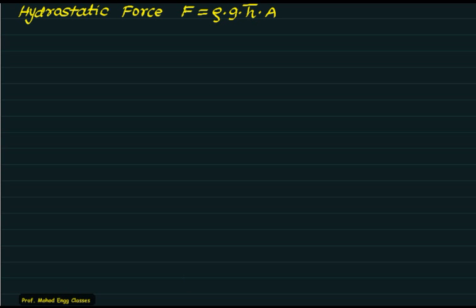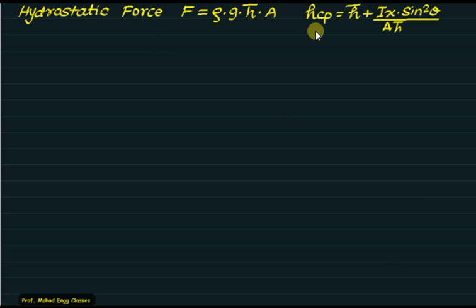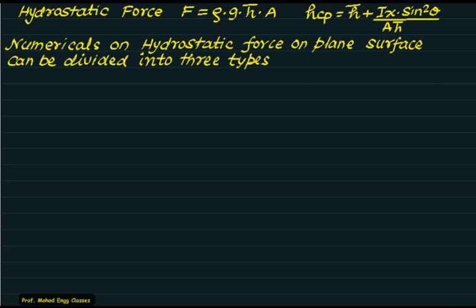In the last video we derived hydrostatic forces on a plane surface, concluding that the hydrostatic force is given by density multiplied by g multiplied by h-bar (distance of centroid from free surface) multiplied by total area A. The center of pressure is given by h-bar plus (moment of inertia about the x-axis multiplied by sin-squared theta) divided by area multiplied by h-bar, where theta is the angle made by the edge view with the free surface.